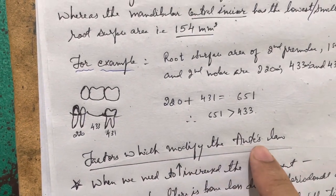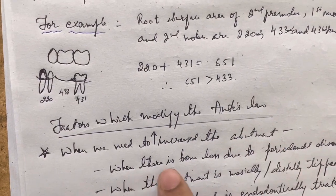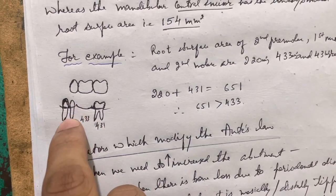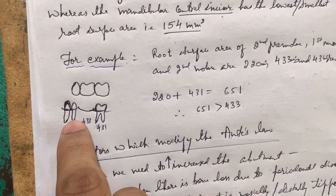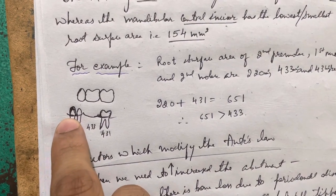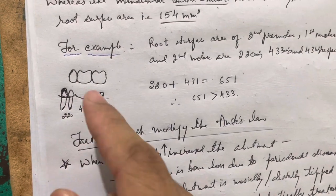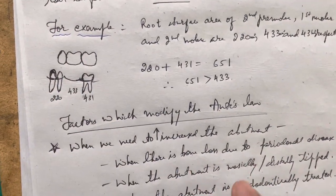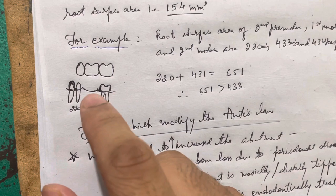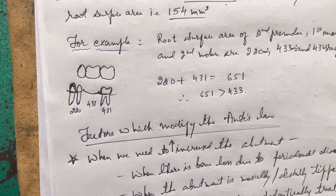Factors which modify Ante's Law — when we need to increase the abutment teeth: when there is bone loss due to periodontal disease, we should increase the abutment teeth and include adjacent teeth as abutment teeth. When the abutment teeth is mesially or distally tipped, we should increase the abutment. When the abutment teeth is endodontically treated, the teeth will not be strong enough, so we should increase the abutment.